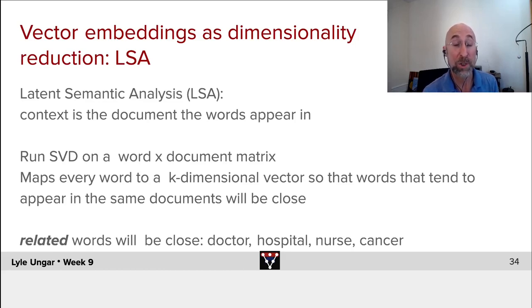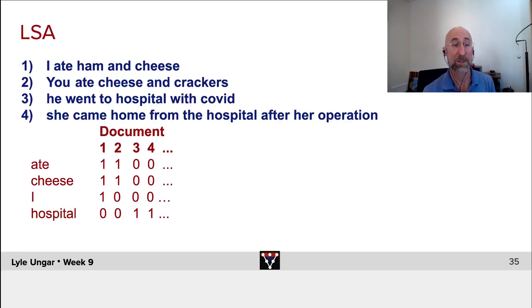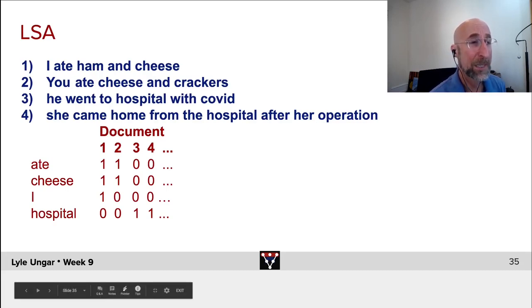This makes all related words close—words like doctor, hospital, nurse, cancer will tend to show up in the same documents and have similar embeddings. Here's a trivial LSA example: four documents. Each row is a word, each column is a document. The word 'ate' shows up in documents one and two but not three and four. If I take this matrix and do singular value decomposition, the first principal component will show that 'ate' and 'cheese' will be close, and 'hospital' will be close to 'doctor' and 'nurse.' Related words have similar embeddings.